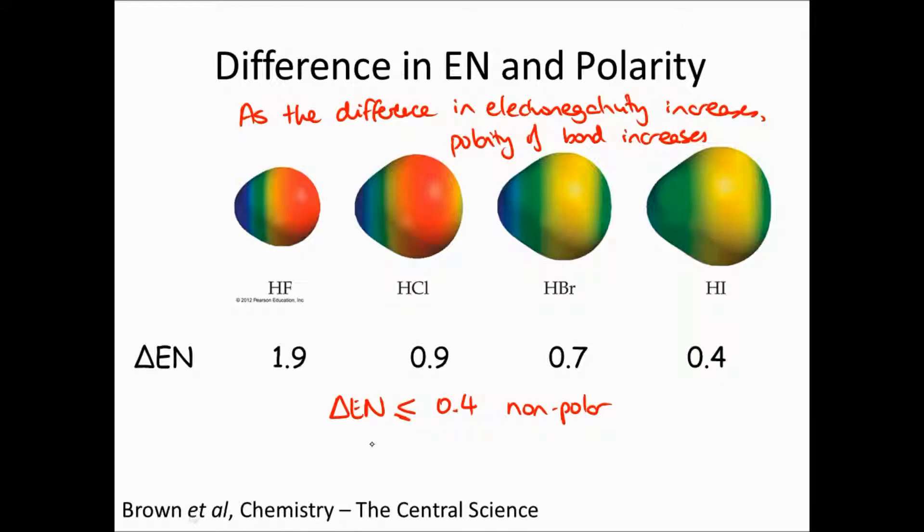And if it's between 0.5 to 2.0, it is polar covalent. As it gets bigger than 2, it is an ionic bond.